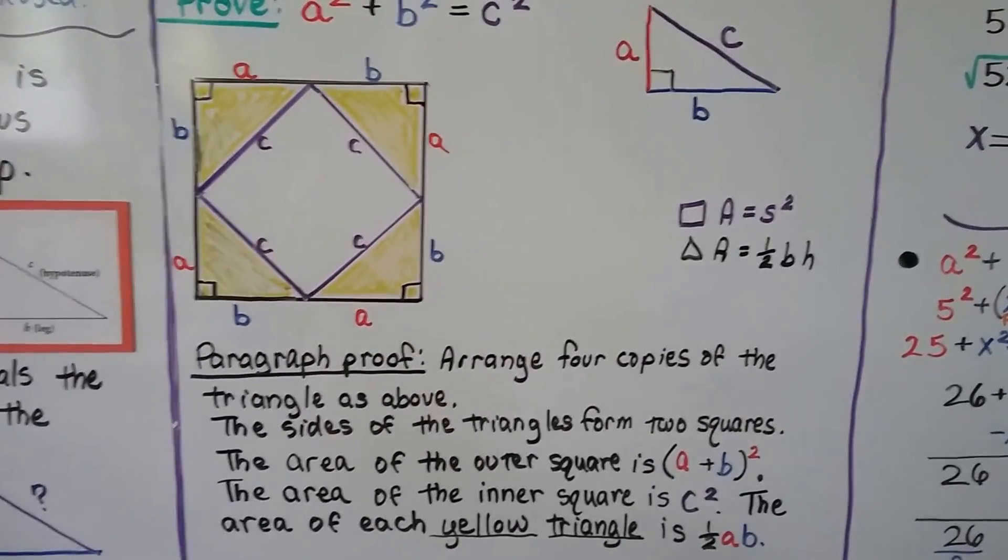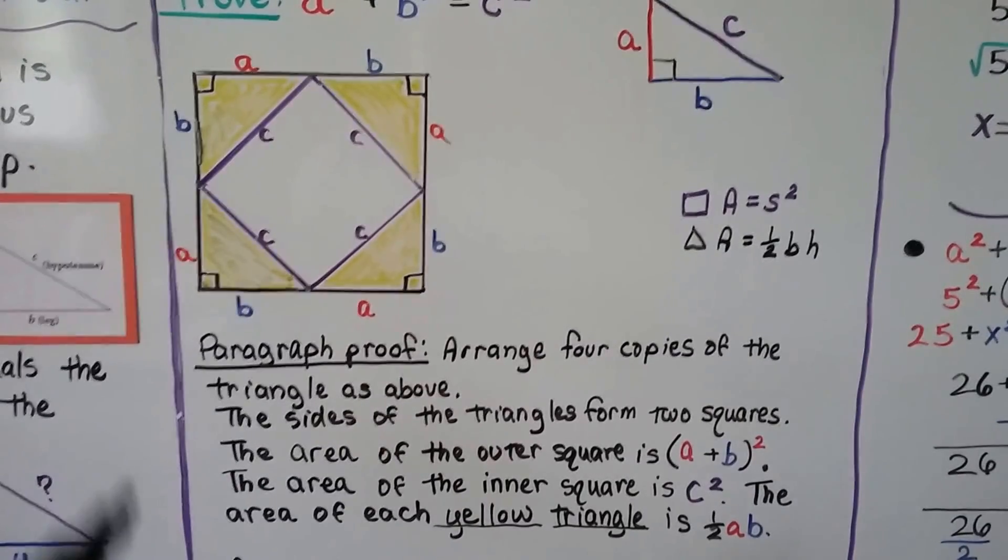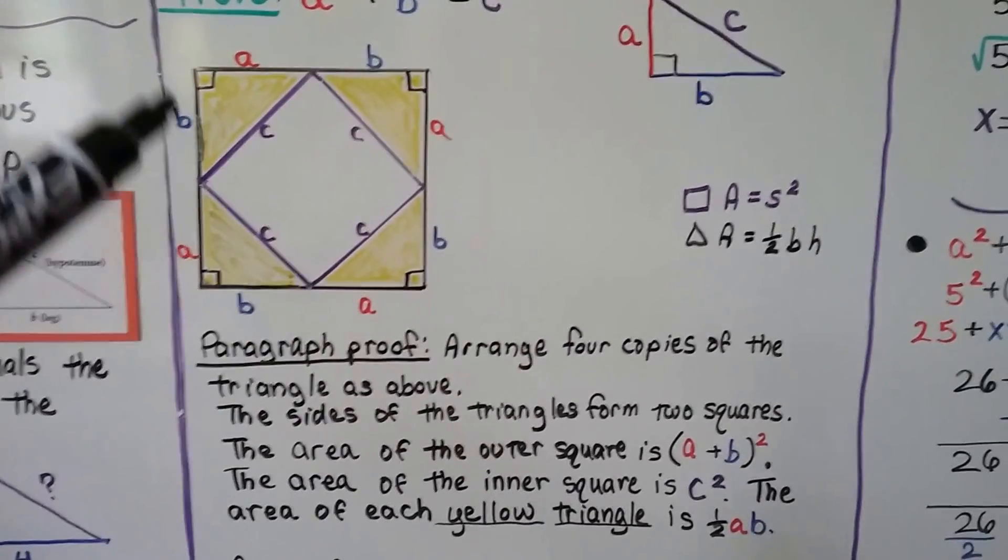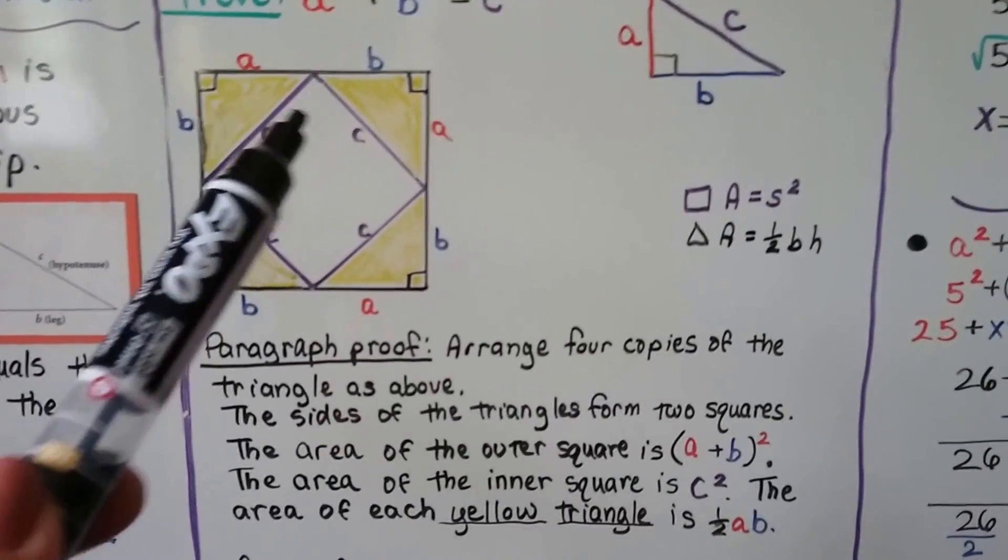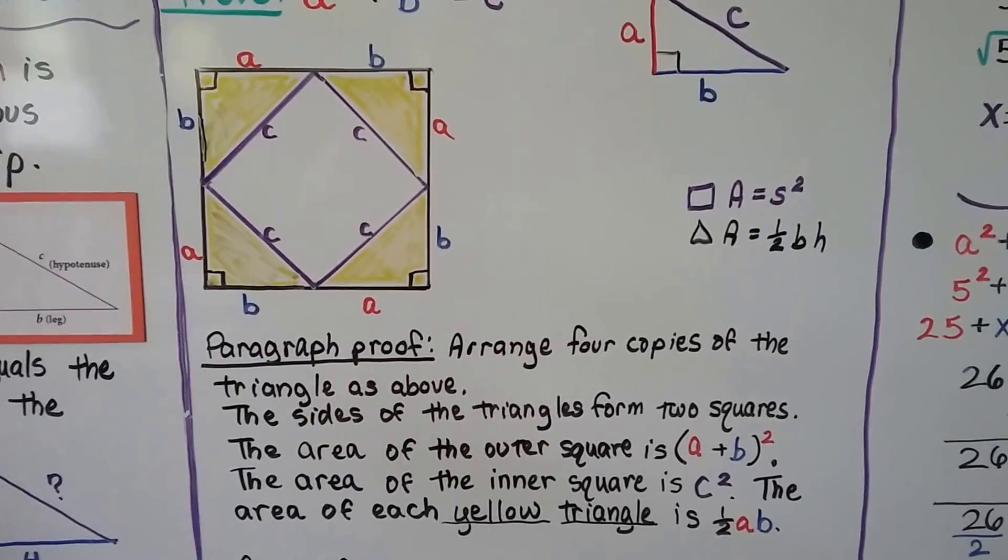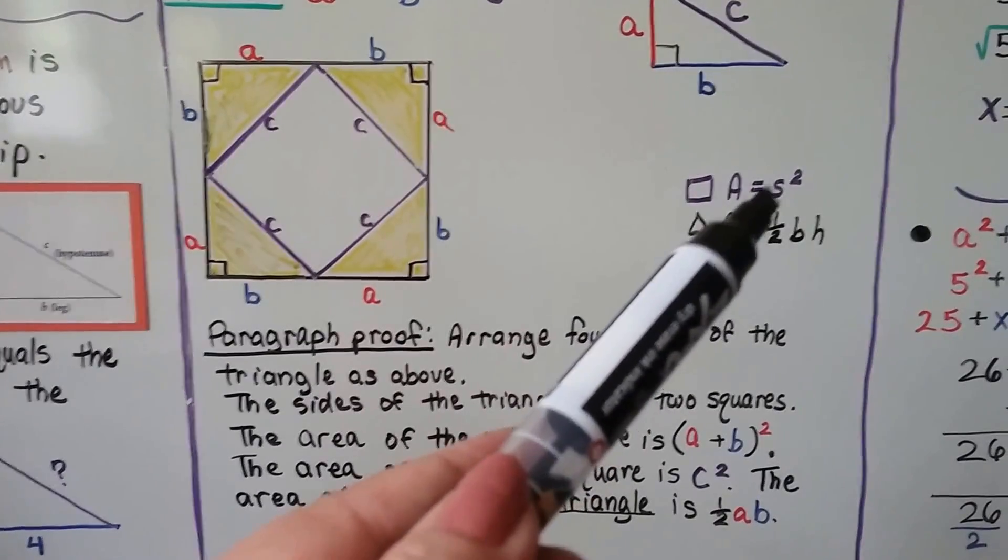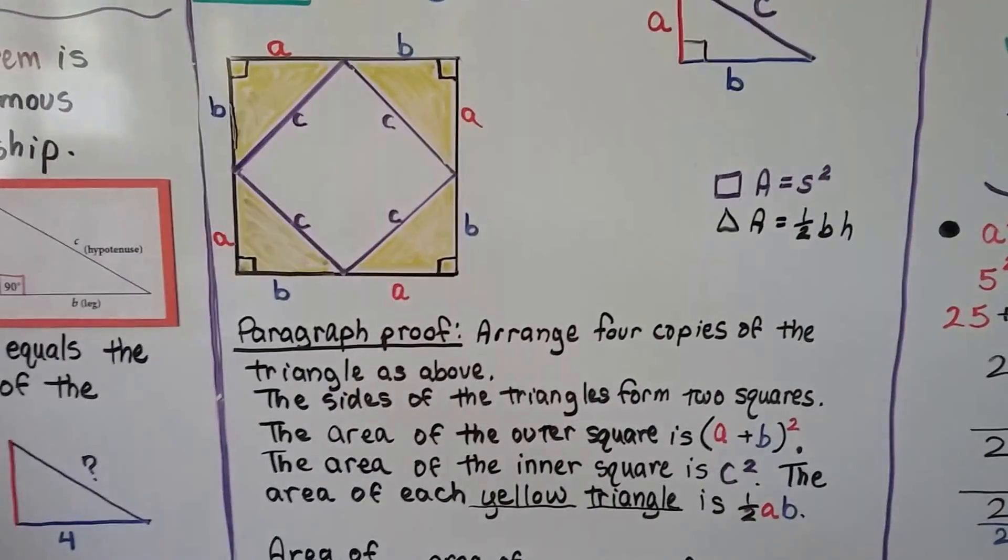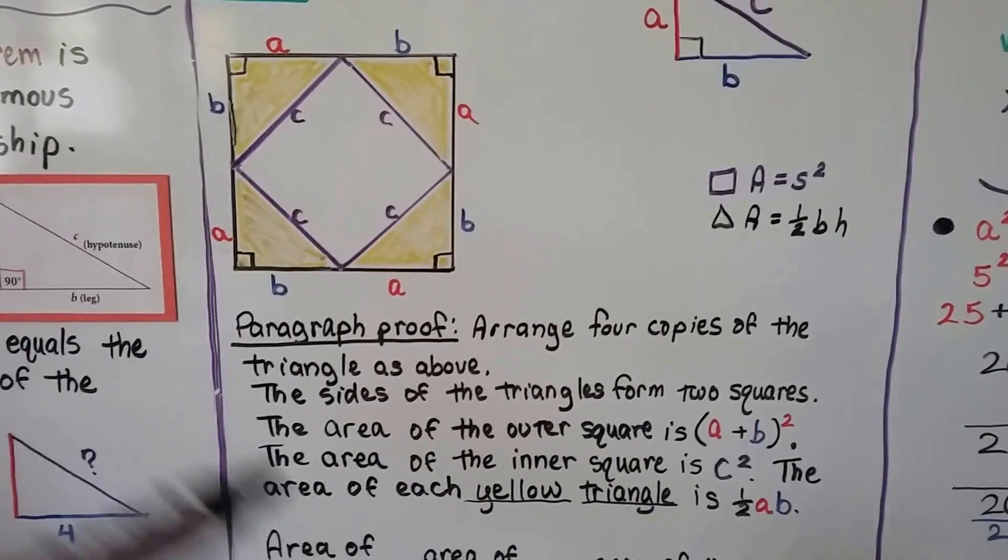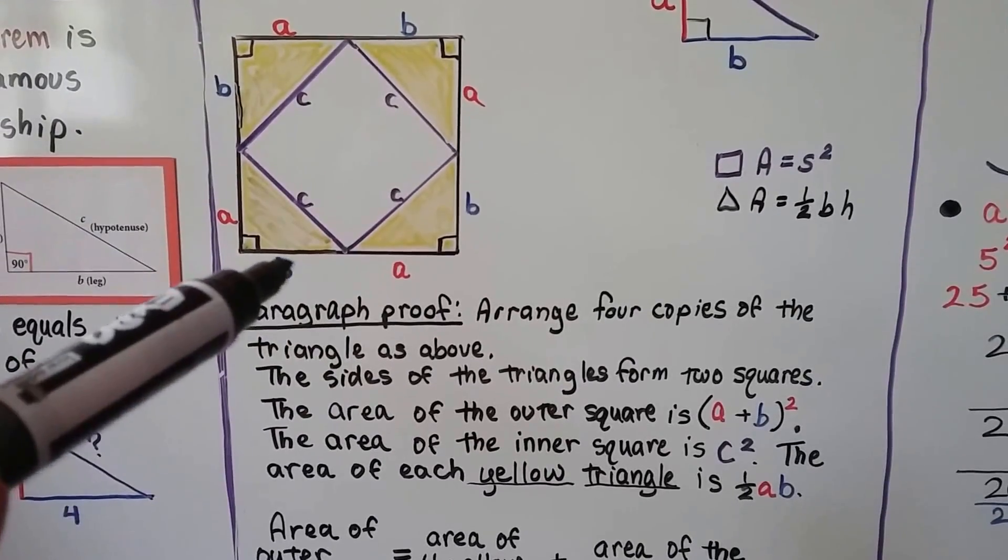We arranged four copies of the yellow triangles as we did here, and the sides of these triangles, the sides a and b, form the outer square. And all the hypotenuse c form the inner square. If you remember, the area of a square is side squared, s squared. We do side times side. And the area of the outer square for this is a plus b squared because we need to do side times side. So we need to do a plus b times a plus b. That's a plus b squared.